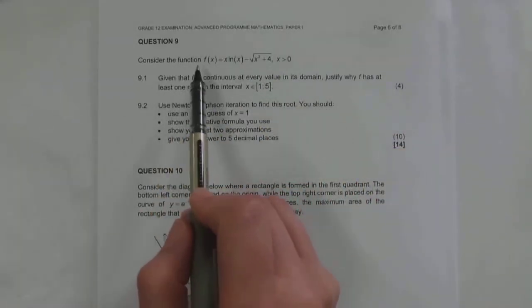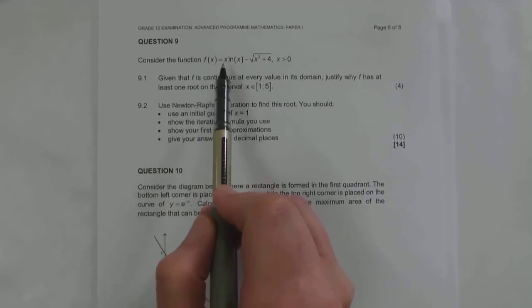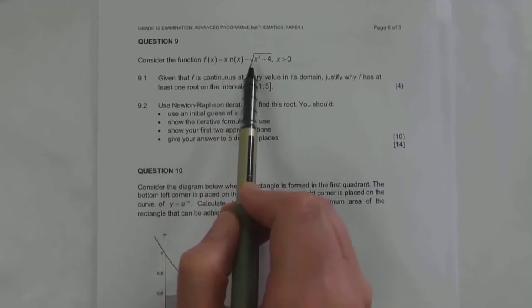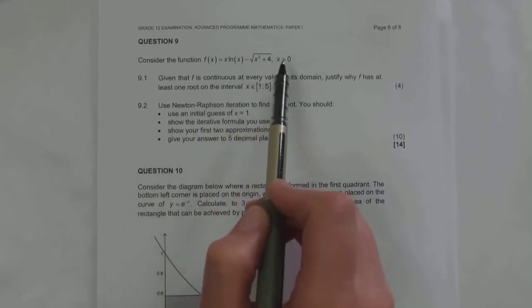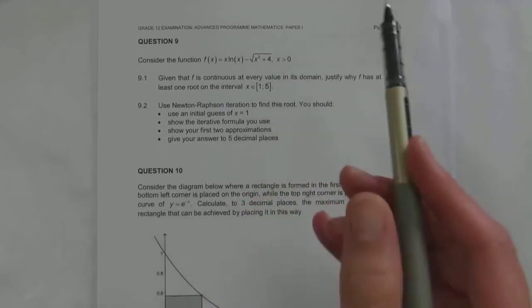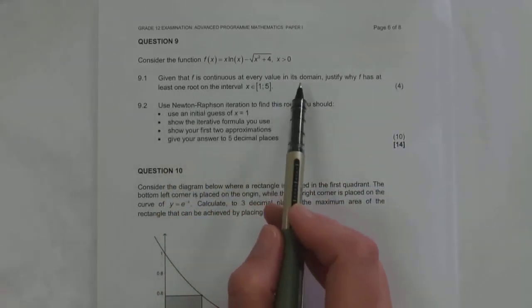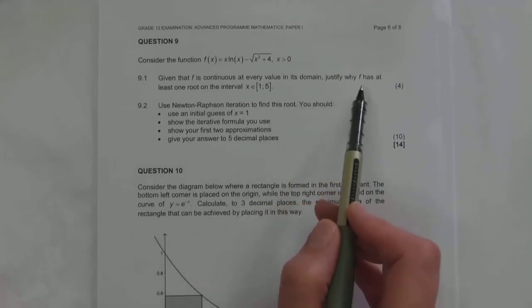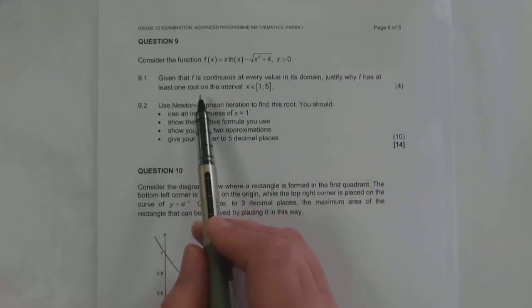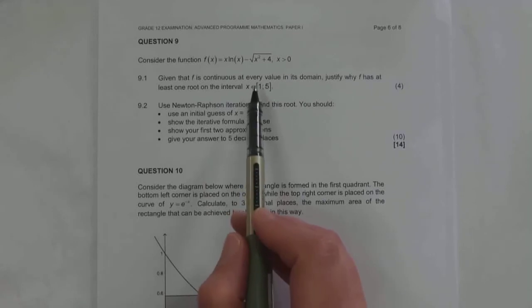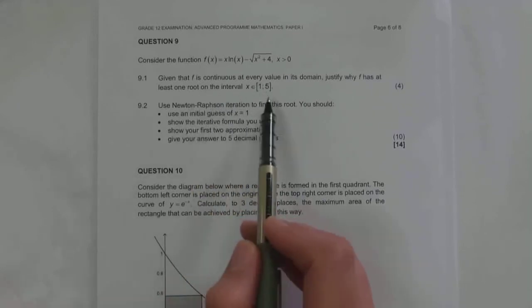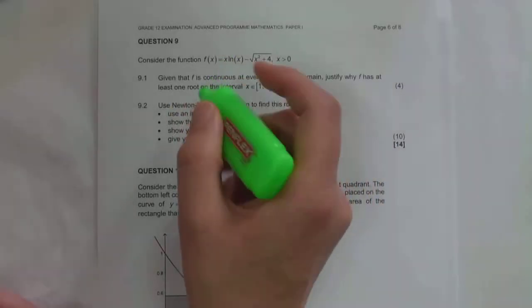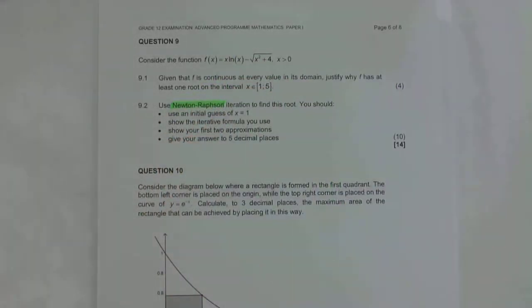In question 9 they say, consider the function f(x) = x times ln(x) minus the square root of x squared plus 4, where x is greater than 0. Given that f is continuous at every value in its domain, justify why f has at least one root on the interval x as an element from 1 to 5. And if you look at the next question, you'll understand why this seems familiar, because this is in fact a Newton-Raphson question.